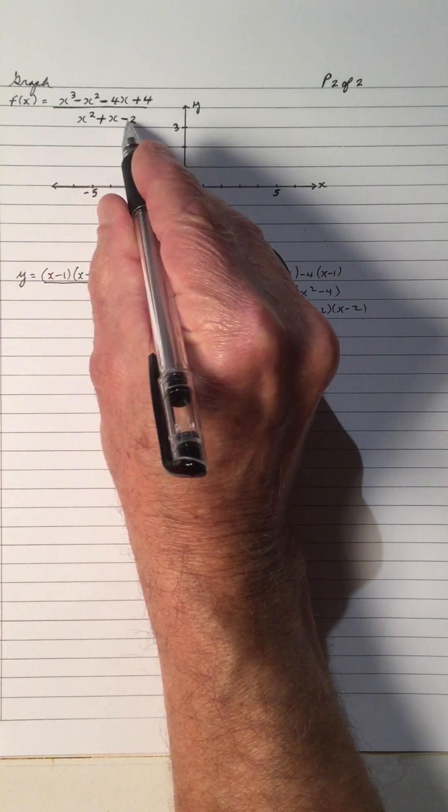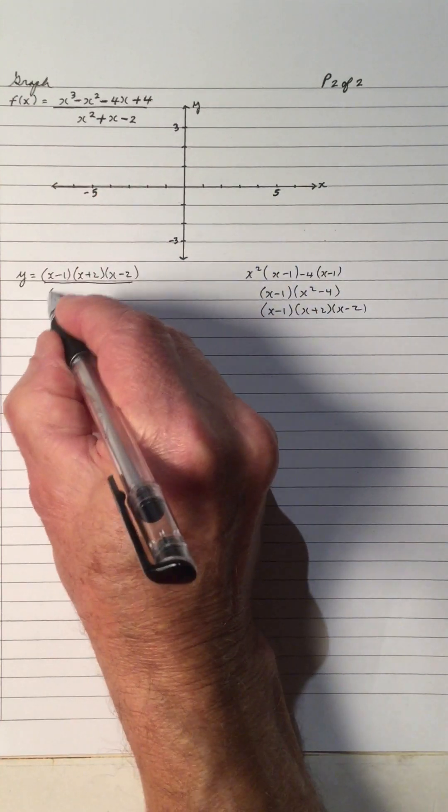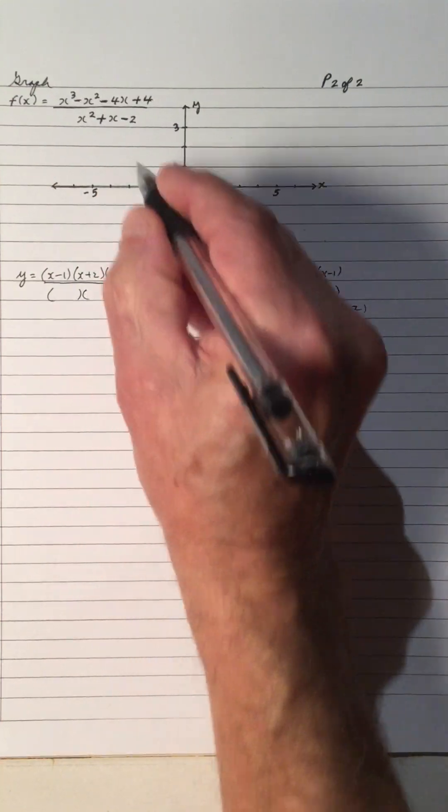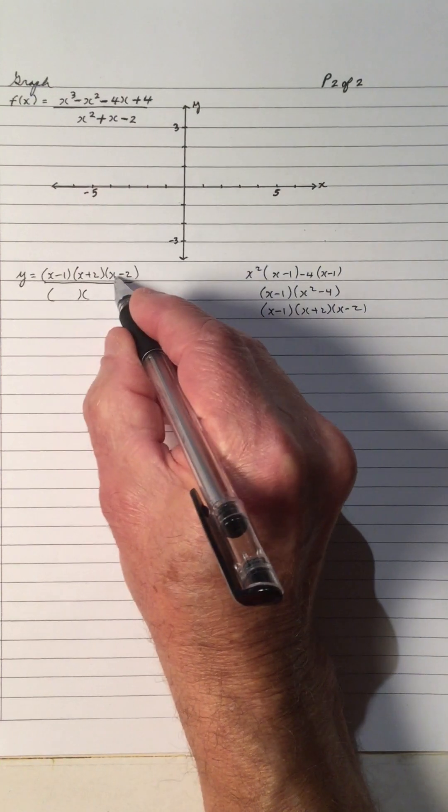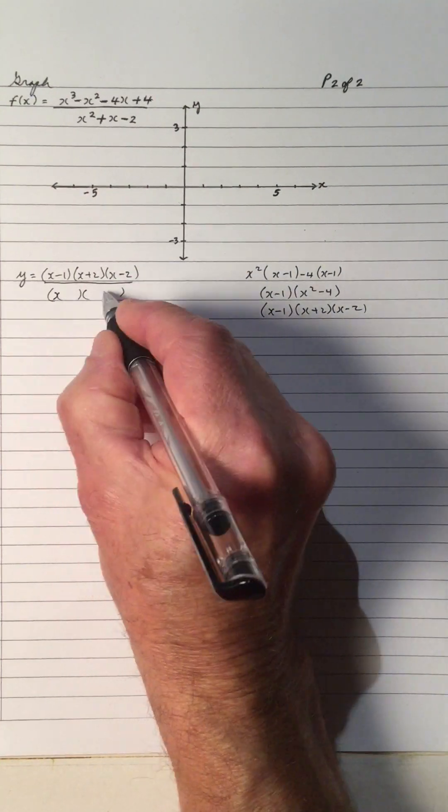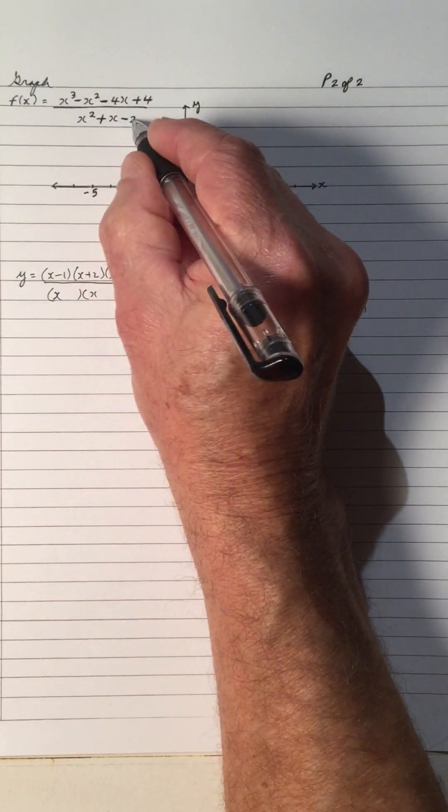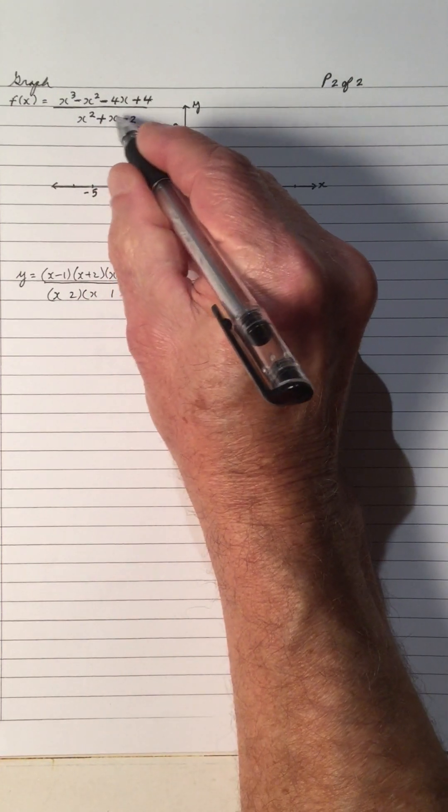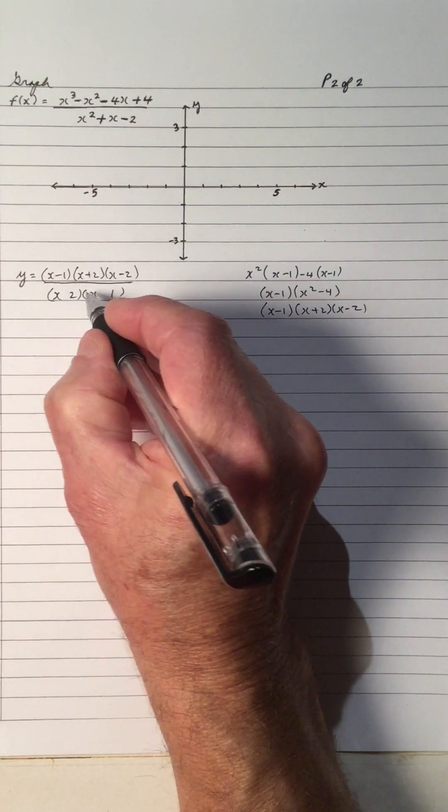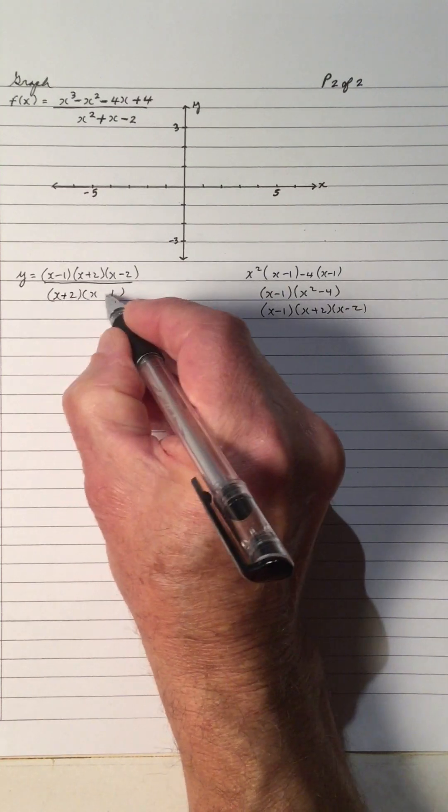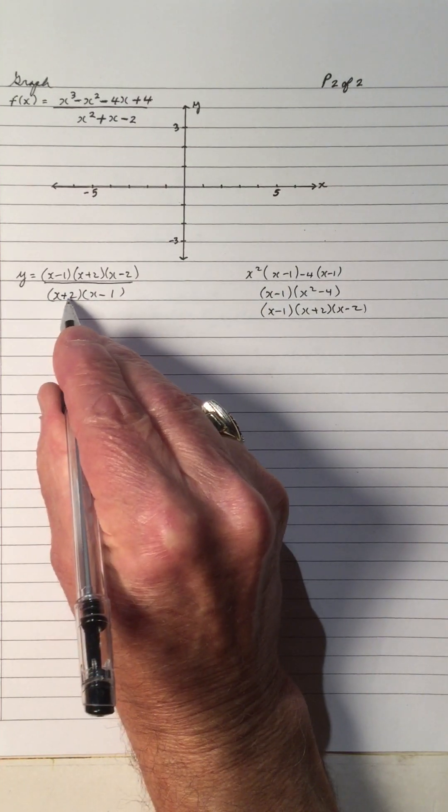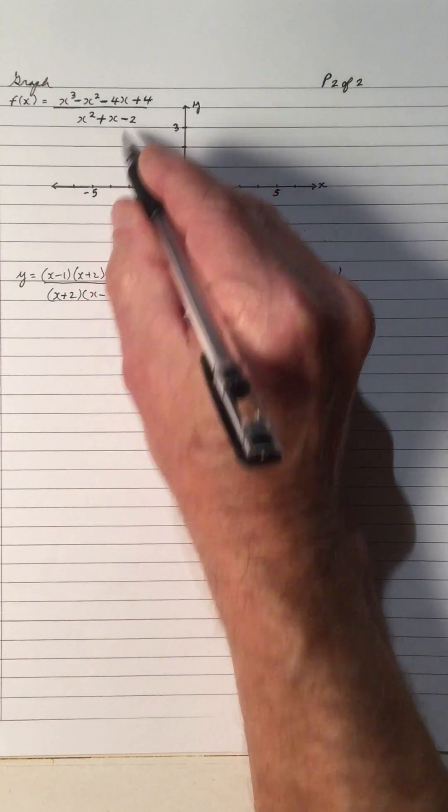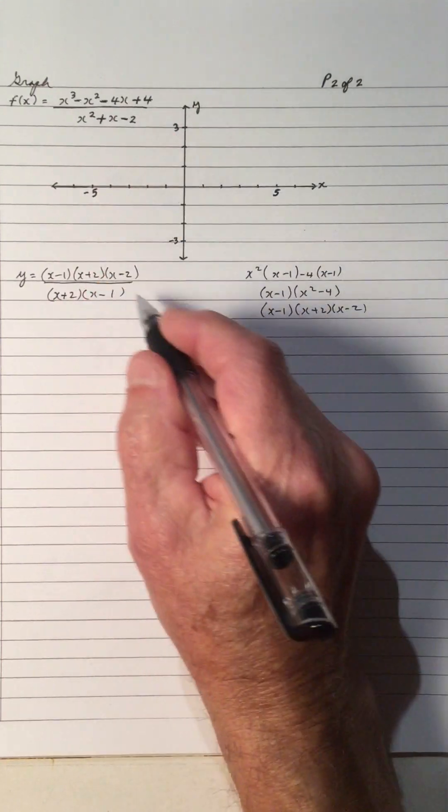And the denominator is a quadratic that could be factorable. So it looks like the 2 is going to be there, so this is an x times an x. Factors of 2 are 2 and 1, and the product is negative and the sum is positive, so it has to be a positive 2, negative 1. Multiply 2 by negative 1, you get negative 2, add and you get positive 1.